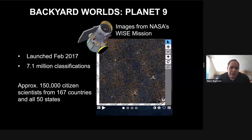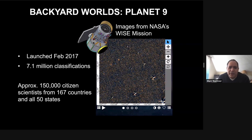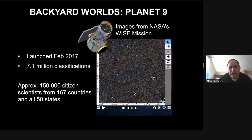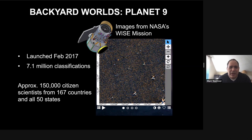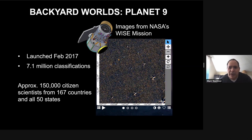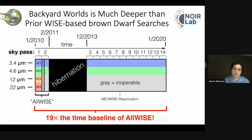Citizen scientists from over 167 countries and all 50 states participate. It's hard even to figure out how many there are in total because the barrier for participation is so low — people aren't even required to sign in. Something like 150,000 folks have participated at some level. For many years now, I've been working on a computational project to download every single WISE exposure ever taken, which is about 35 million making up something like a quarter petabyte of raw data, and then make coadded maps spanning this full time baseline, which is now almost 10 years of public data.